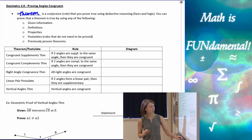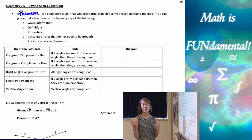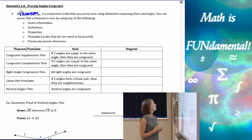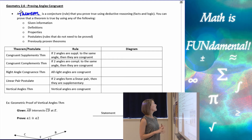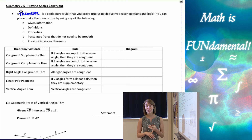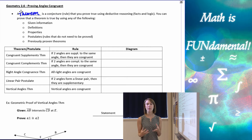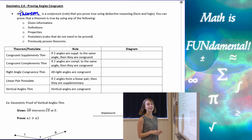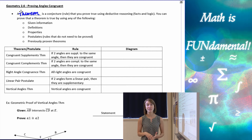We can prove that a theorem is true using any of the following: given information, definitions, properties, postulates — which are also rules, but postulates we don't have to prove before we can use them. We can also use previously proven theorems.